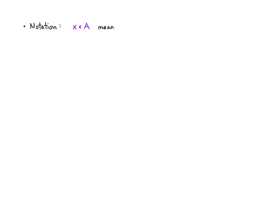A bit more notation: x with this epsilon symbol followed by A means x is an element of A — a nice shorthand to have. If I draw a slash through that symbol, it means that x is not an element of A.